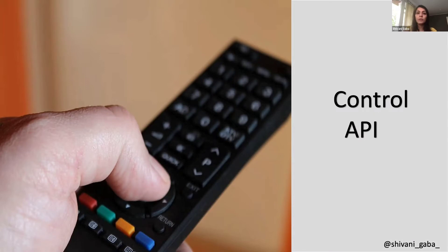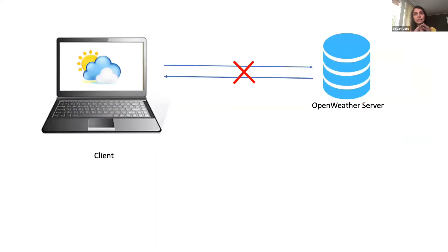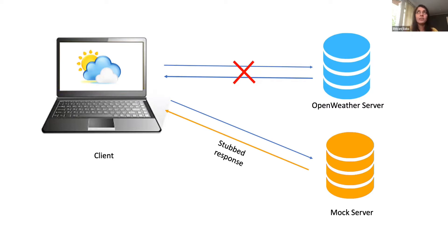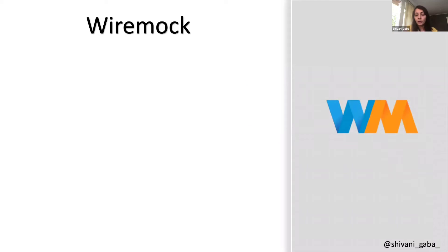What we want is control over the API so we can set whatever response we want and test our system accordingly. We want to break the connection between the original server and our client and have a mock server that gives us a stubbed response. Stubbing means we are setting what response we want to have — and we would create this server using WireMock.